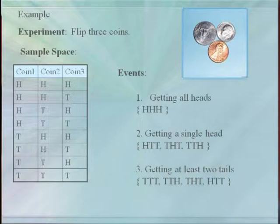Another example of a random phenomenon would be to flip three coins in the air and determine the number of heads and tails that appear. Since there's two outcomes for each coin, there's two times two times two, or eight elements in our sample space. Three possible events you might find of interest are shown here: getting all heads, which occurs in one of our eight cases; getting a single head occurs three ways in our sample space; and getting at least two tails occurs four different ways.